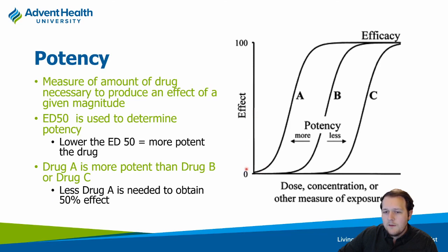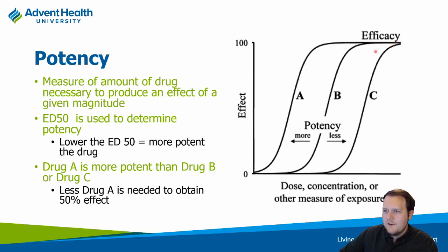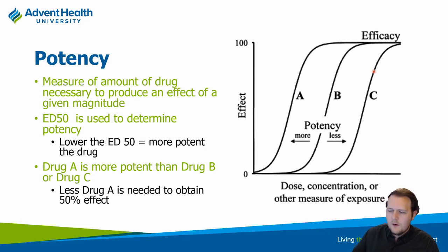Regarding potency: shifting the curve further to the left indicates greater potency, because a lower dose achieves a higher effect. Comparing drugs A, B, and C by their ED50s, drug A is most potent, B is intermediate, and C is least potent — requiring the most drug to achieve the same effect. However, their efficacy can be identical; it just means you need more of drug C to get there. This explains why some drugs are dosed in grams and others in milligrams or micrograms.